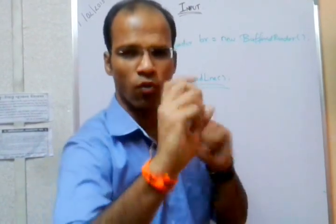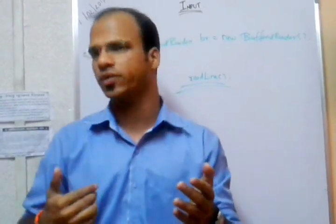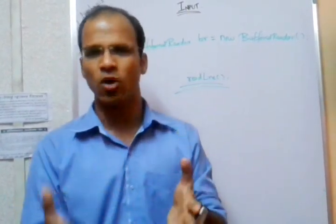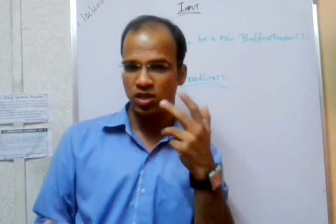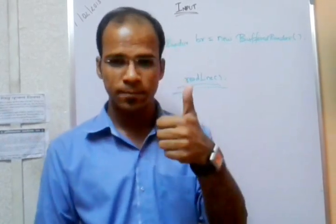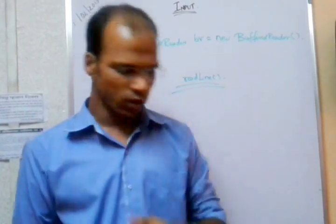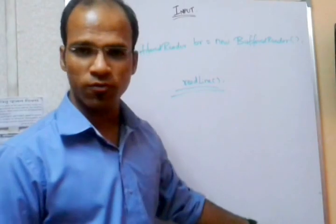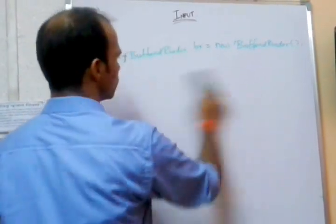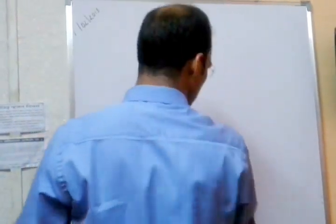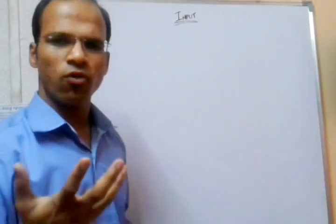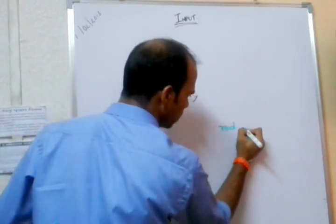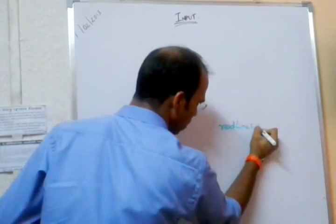The last question to answer is: what? When the user inputs something, what exactly is the data you are getting? You can get text, you can get an image - there are many formats and many types of data. So you have to answer these three questions: where, how, and what. Let's go through them one by one.